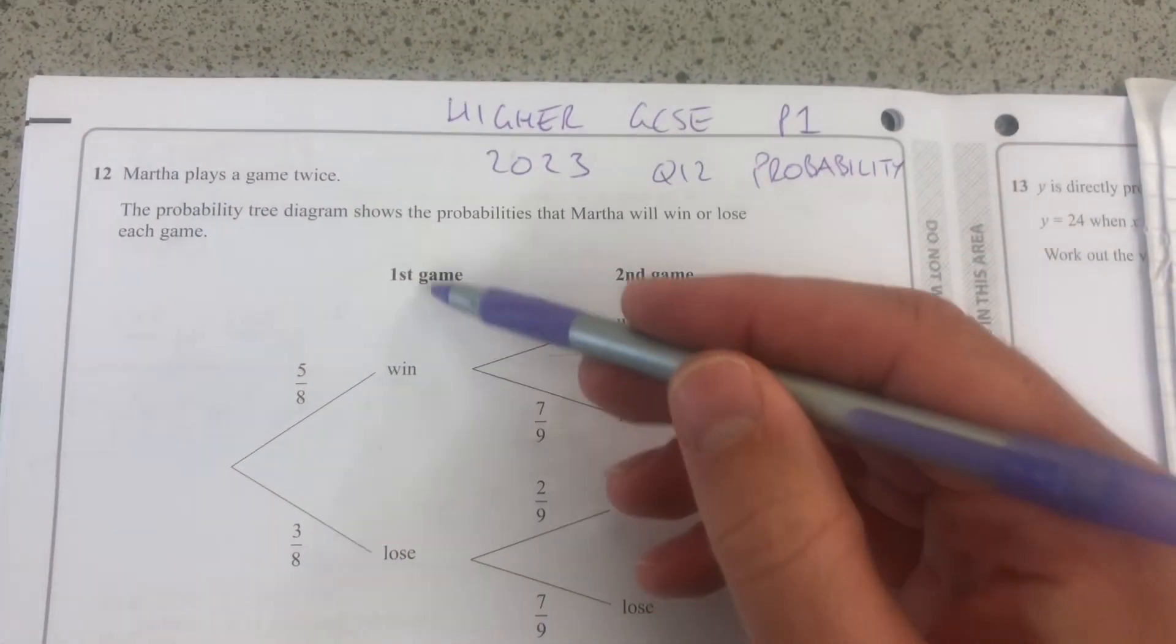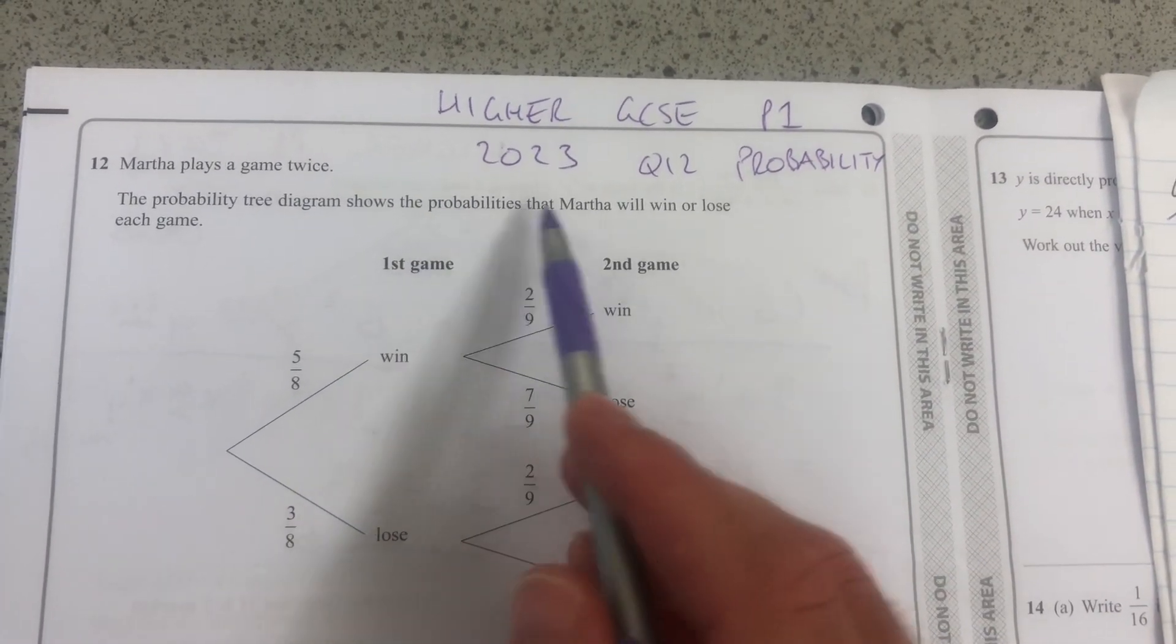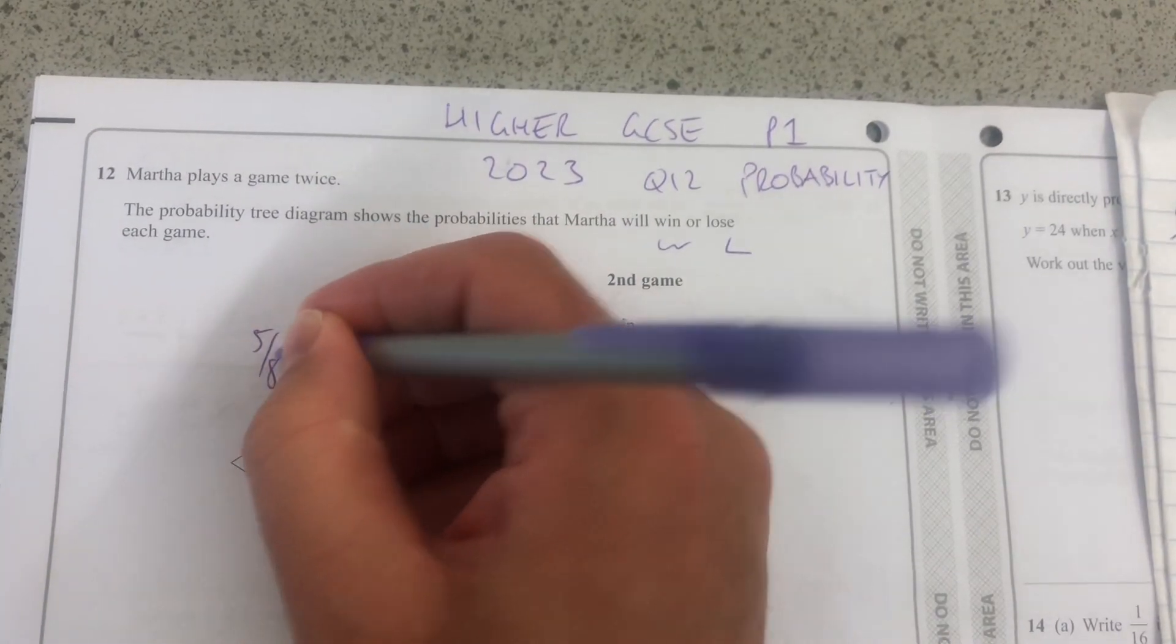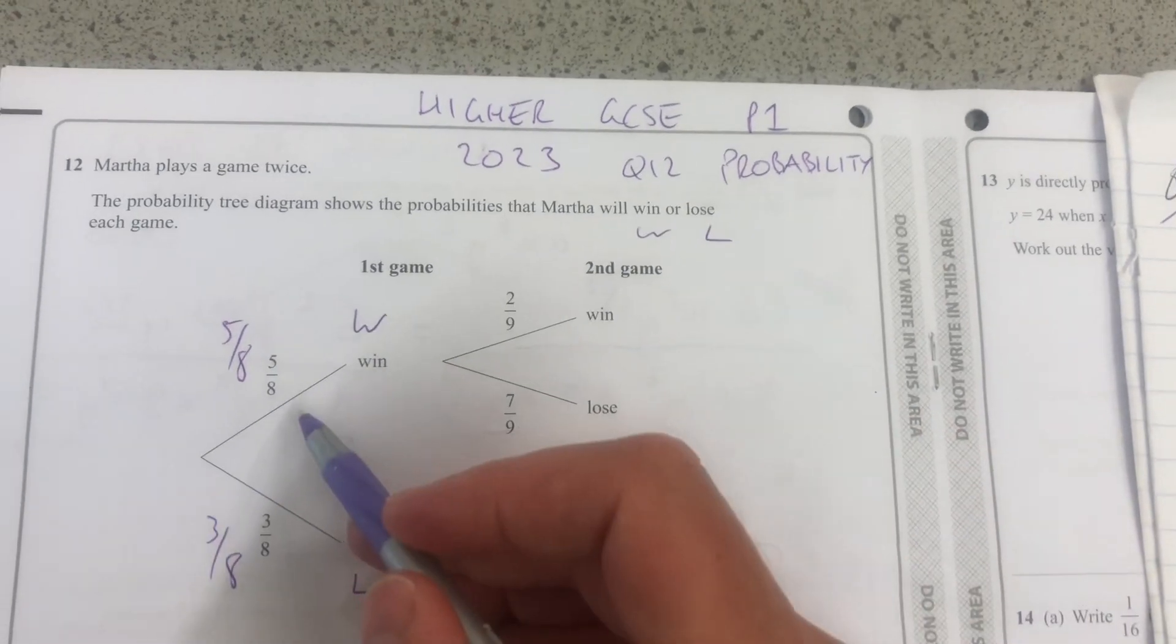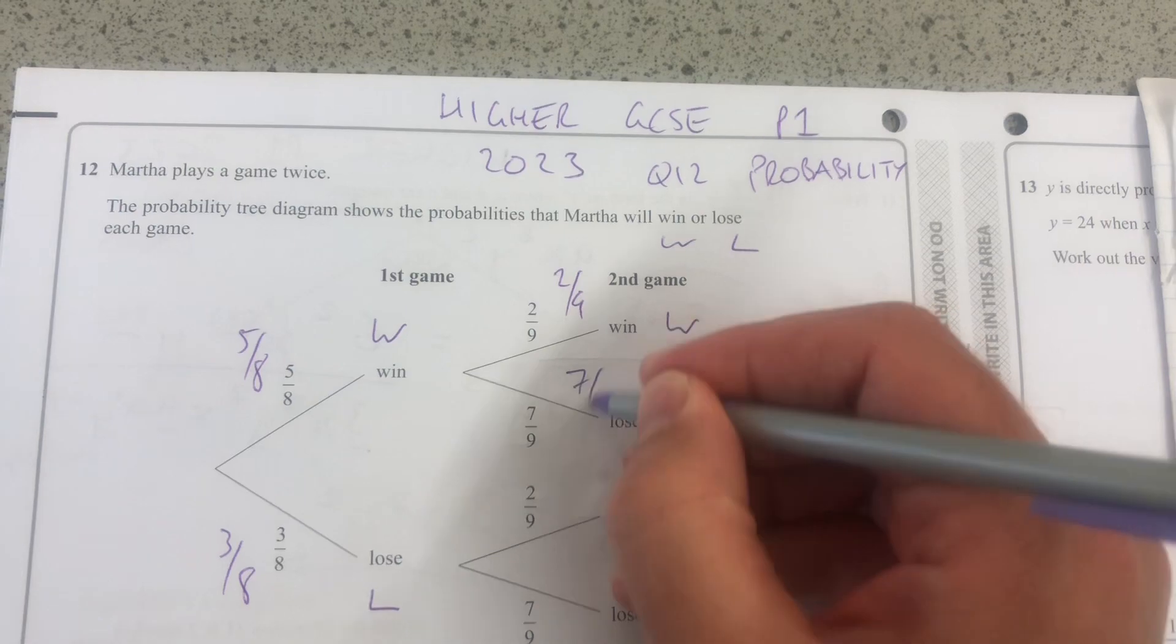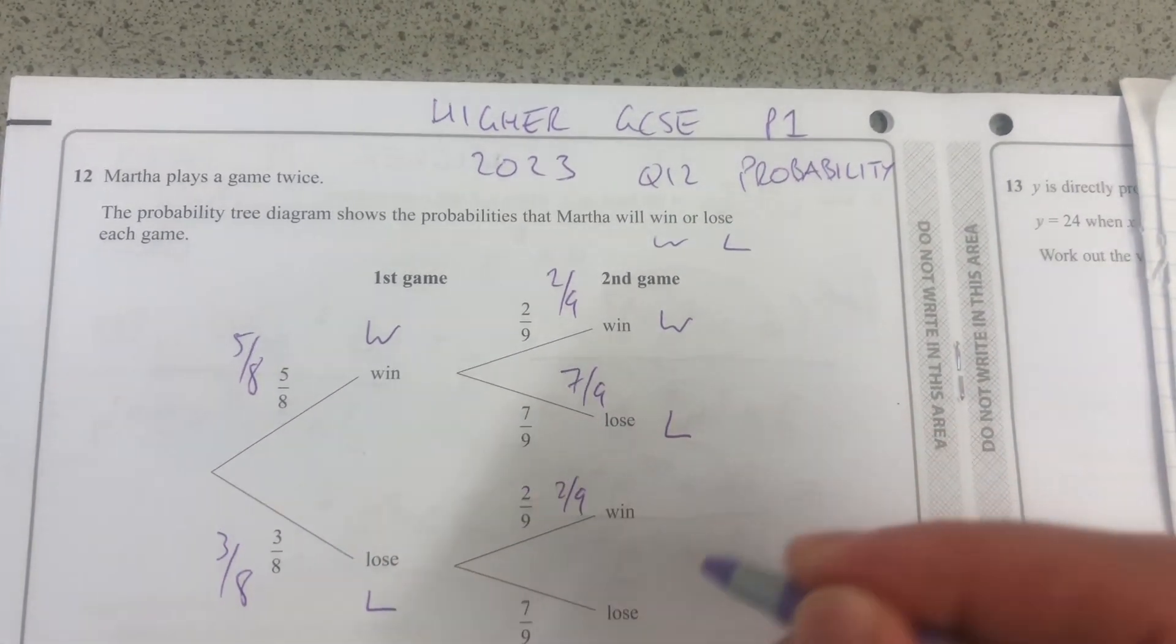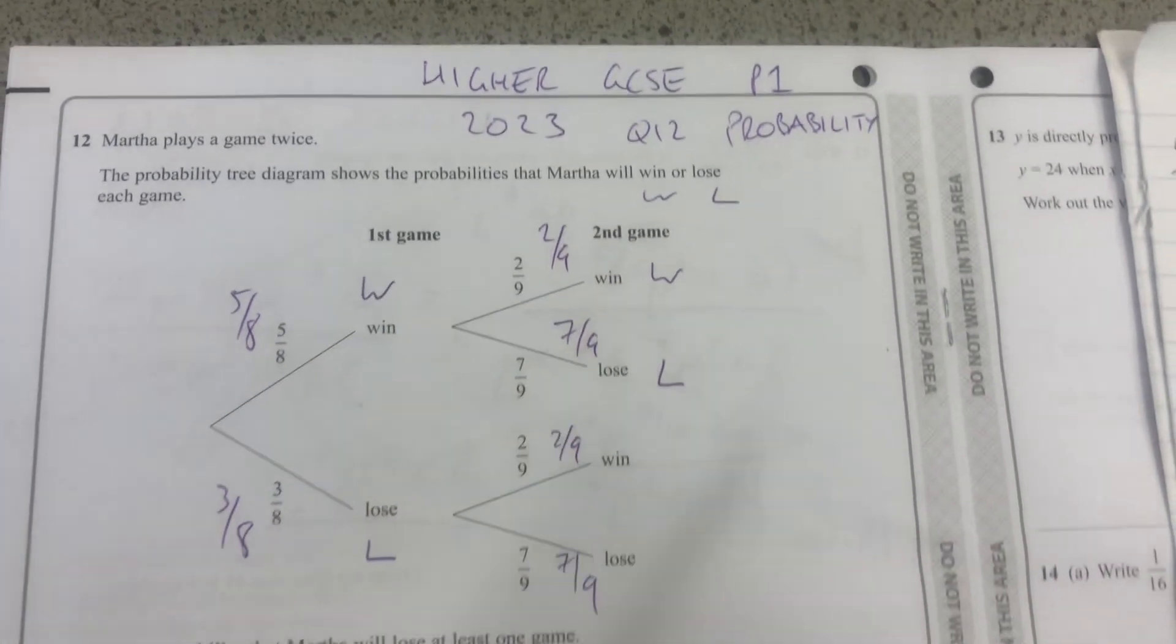Martha plays the game twice, first game, second game, and this probability tree diagram shows the probabilities that Martha will win or lose. There's five-eighths that she'll win, three-eighths that she loses. If she wins, two-ninths a chance that she'll win, seven-ninths a chance that she'll lose, and in fact that doesn't change in the second game either. So it doesn't depend on the first.